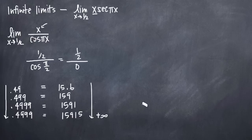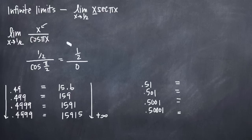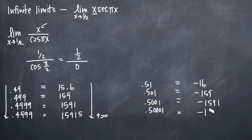Now we need to check what's happening on the right-hand side, because it could be approaching positive or negative infinity. So we'll try plugging in 0.51, 0.501, 0.5001, and 0.50001. When we plug all four of those values into our function, we get the same magnitudes but negative: approximately negative 16, negative 159, negative 1591, and negative 15,915. So as we get closer and closer to 0.5 from the right-hand side, the value of our function approaches negative infinity.